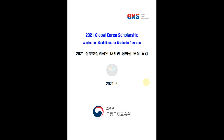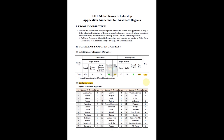You will get the guideline in English as well as in Korean. For easy understanding, we will use the document which is based on English. As you can see here, last year the Korean government aimed to take 1278 students among all other nations. They divided the total students into two subdivisions: Embassy track with 663 graduates, and University track with 615 students.